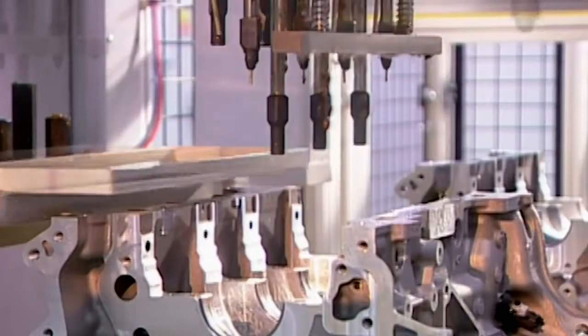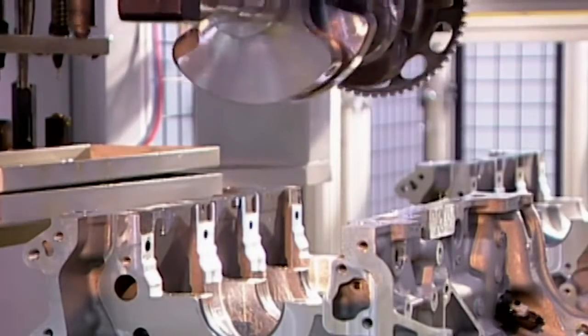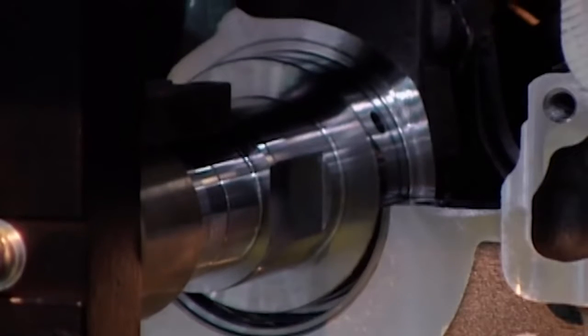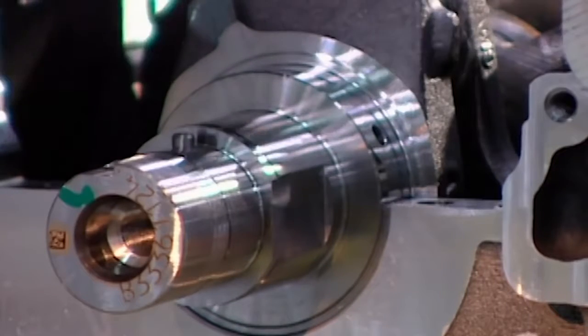Back on the engine assembly line, the engine blocks are still upside down. A robot lubricates the four bearings on which the crankshaft will turn, then drops the crankshaft into position.